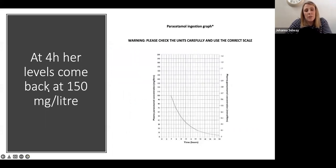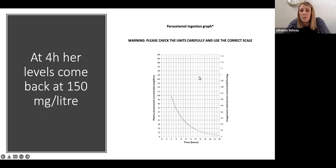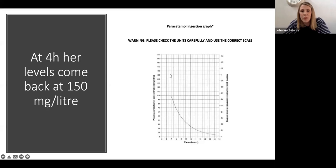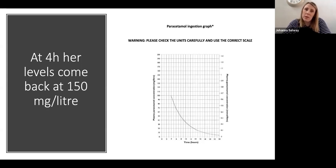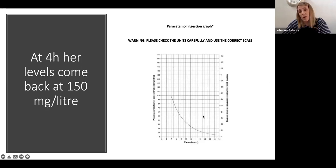Her levels at four hours come back at 150. This is the paracetamol treatment monograph. We know she took it at four hours, so at the four-hour point on the graph, her level is 150. That is to the right of the monograph, so she requires treatment. The weight is so important — had this person been 70 kg, she might not have needed treatment. But she's quite small at 50 kg, and at four hours her levels are above the treatment line on the monograph. She will need to be treated.